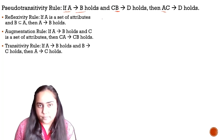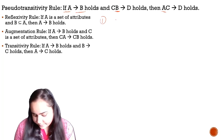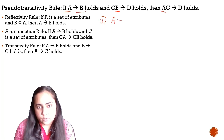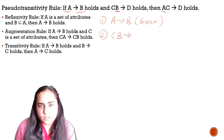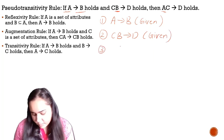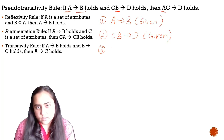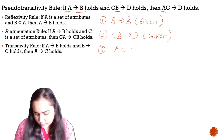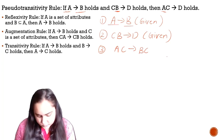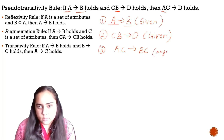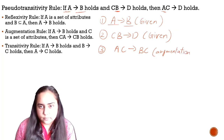By proving it, we are given two things and have to prove a third. As a first step, we write what we already have: A determines B — this is given. As a second step, we write CB determines D — also given. As a third step, I'm going to apply the augmentation rule on step one and make it look like AC determines BC, adding C on both sides — this is augmentation of C in step one.